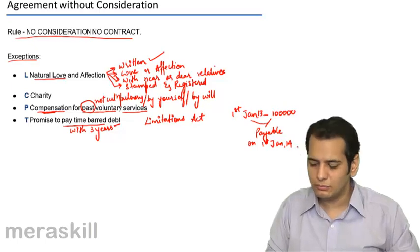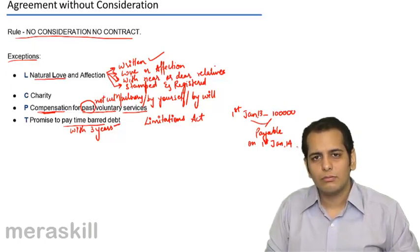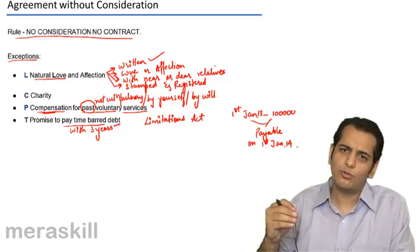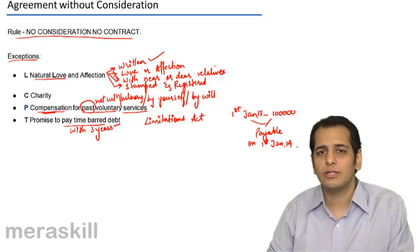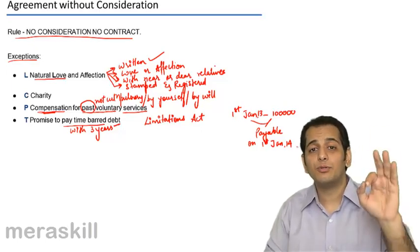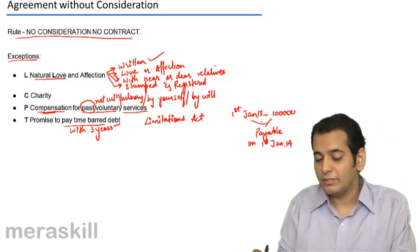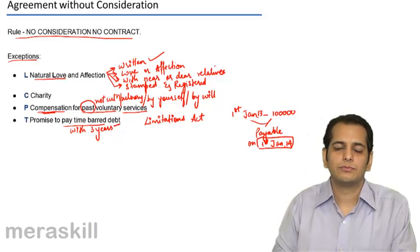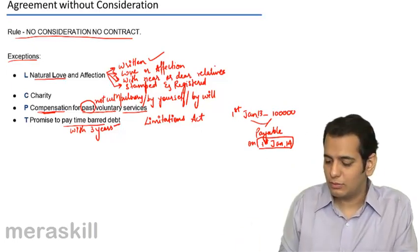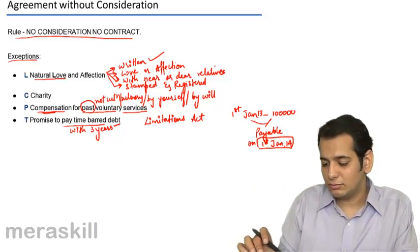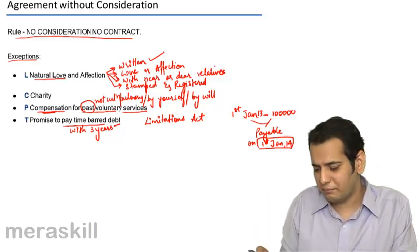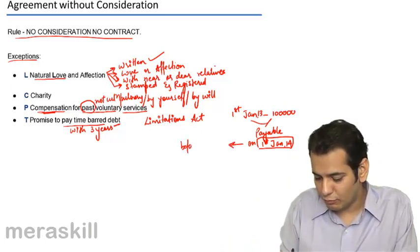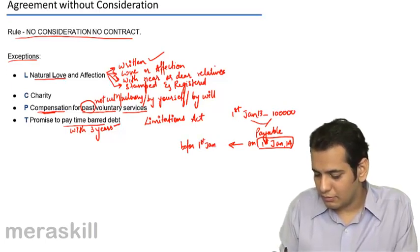And if I do not repay the loan, you obviously have a legal remedy with you. You obviously have a legal course of action. You can go to the court and recover your money from me. You can file a suit against me. But within what period? You have to do it within 3 years. Within 3 years from which date? From the date when this becomes due, when the loan or the debt becomes due. See, you have given the loan on 1st Jan 2013, however it becomes due for payment on 1st Jan 2014. So you have to file a complaint before 1st Jan 2017.